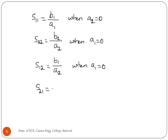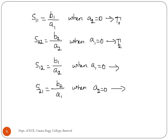S21 = B2/A1 when A2 = 0. S11 is the reflection coefficient at port 1 when port 2 is terminated with a matched load. S22 is the reflection coefficient at port 2 when port 1 is terminated with a matched load. S12 is the attenuation of the wave travelling from port 2 to port 1. S21 is the attenuation of the wave travelling from port 1 to port 2.